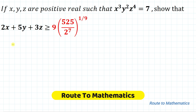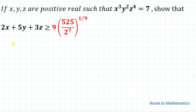Hello everyone, welcome to Root 2 Mathematics. In this video we're going to solve an interesting question on inequality. The given question is: if x, y, z are positive reals such that x³y²z⁴ equals 7, then show that 2x + 5y + 3z must be greater than or equal to 9 multiplied with (525 / 2⁷)^(1/9).